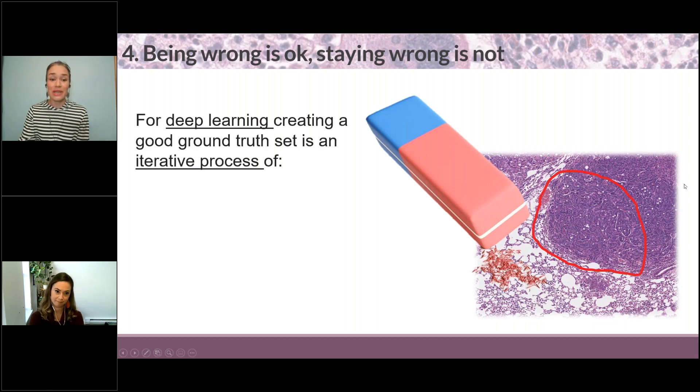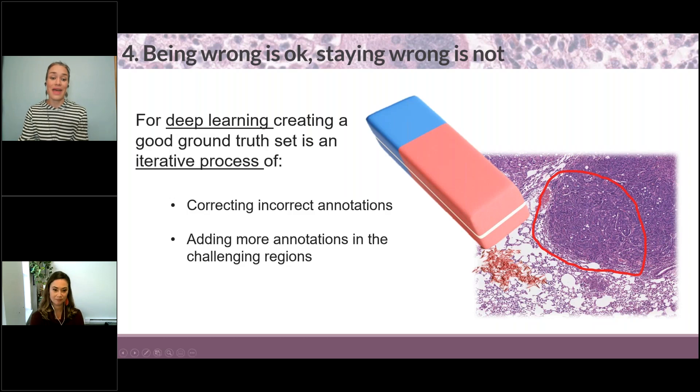So for deep learning, creating a good ground truth set is an iterative process like we've seen in what Lindsay just showed. And this iterative process consists of correcting incorrect annotations and adding more annotations in the challenging regions. This is an iterative process and you basically communicate with the model.